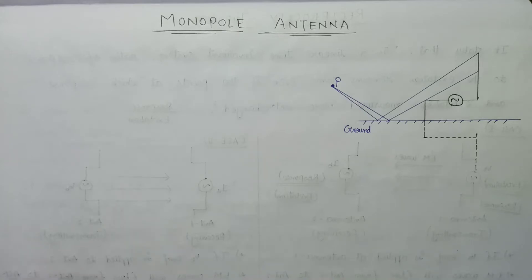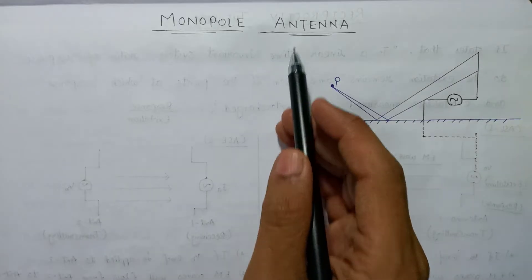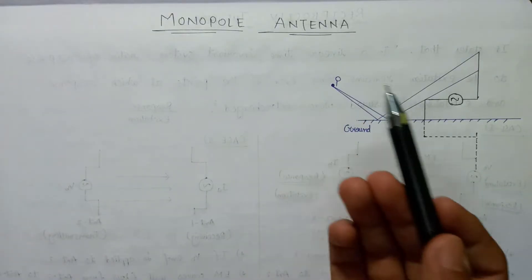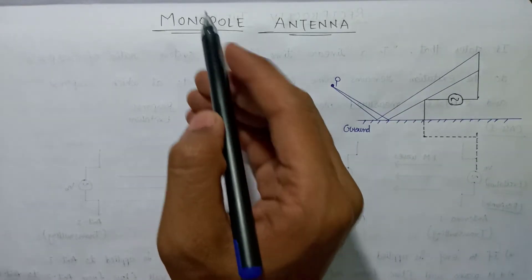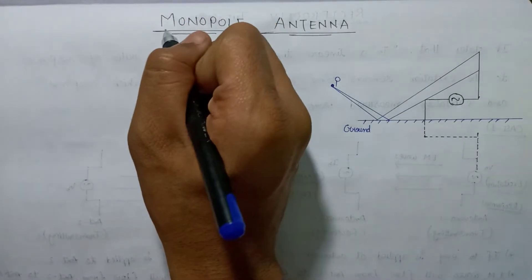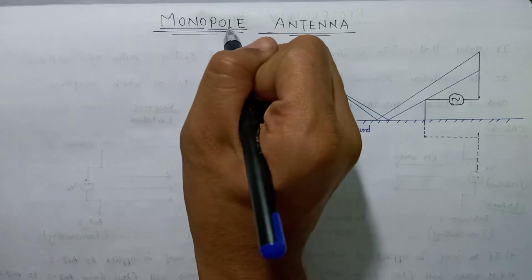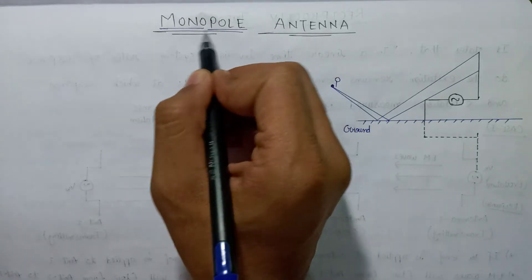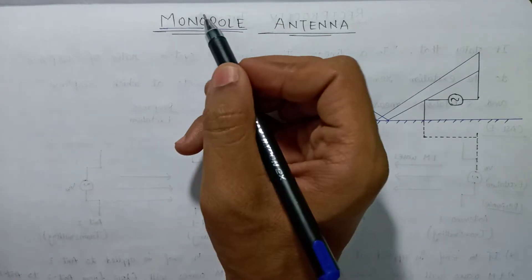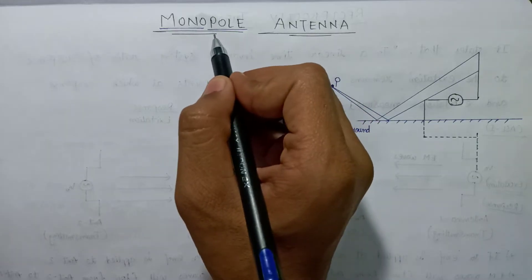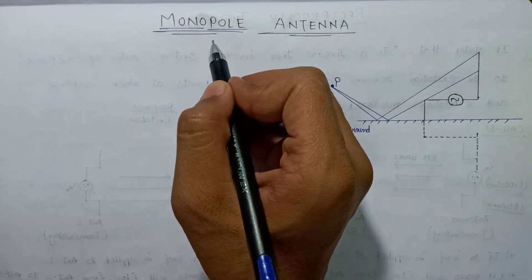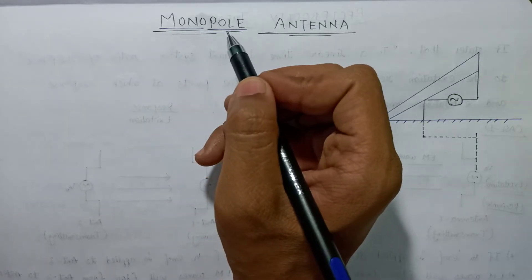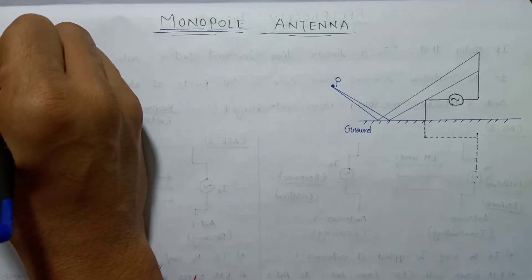Hi everyone, in this lecture we are going to study about monopole antenna. As its name suggests, it comprises of two things: mono and pole. Mono means single, and here is the antenna that has only one pole.